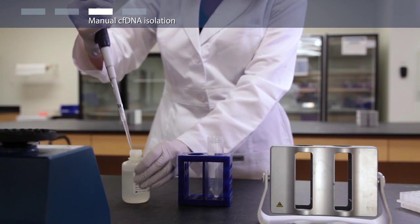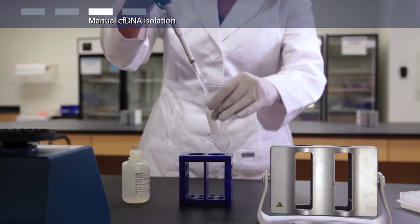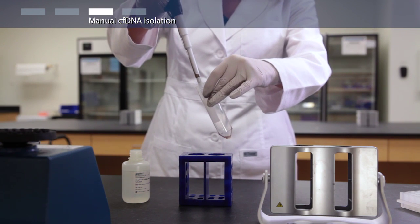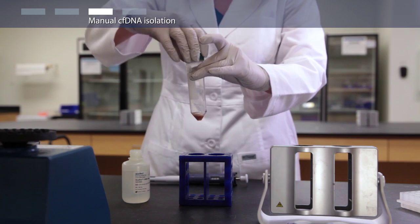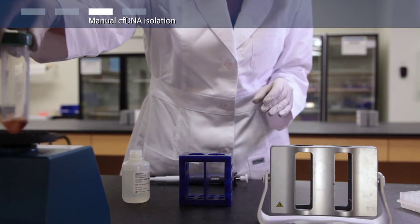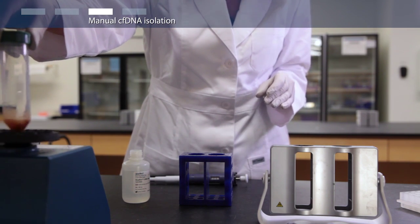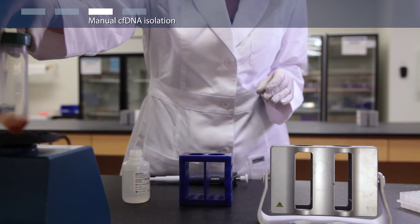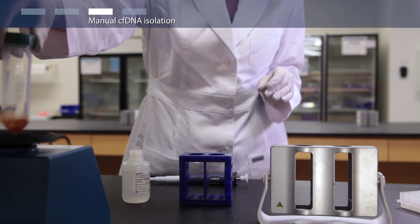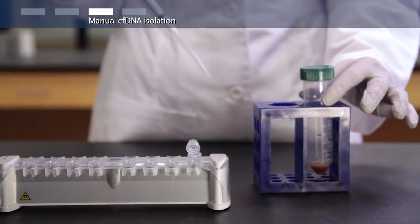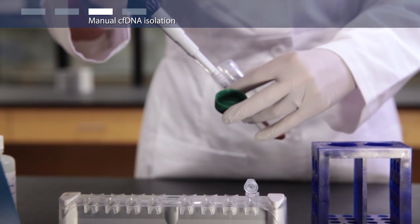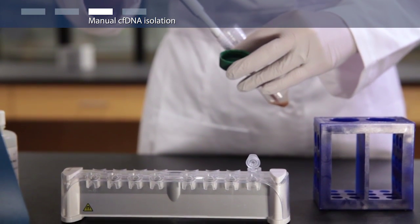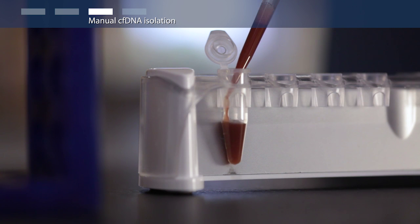Add 1 ml of wash solution. Vortex for 30 seconds and transfer the bead slurry to a microcentrifuge tube in a DynaMag 2 magnetic stand.